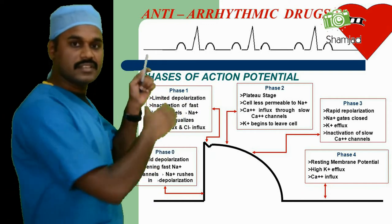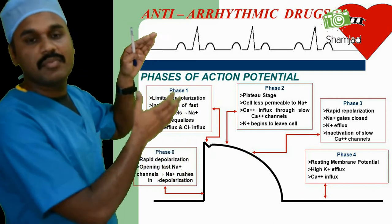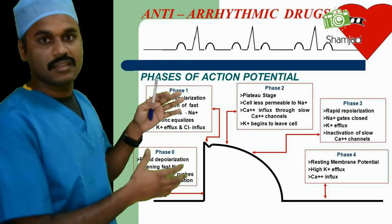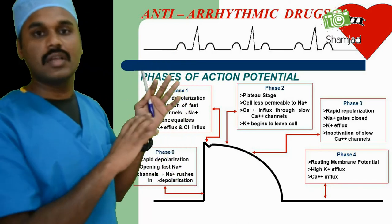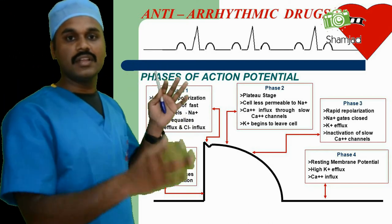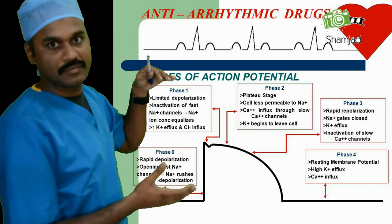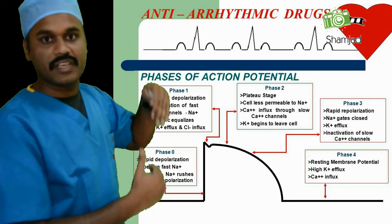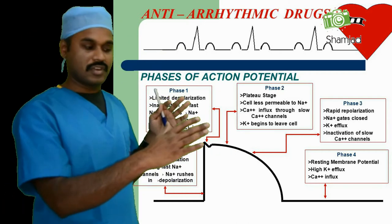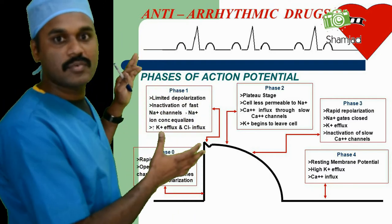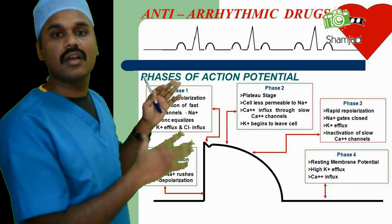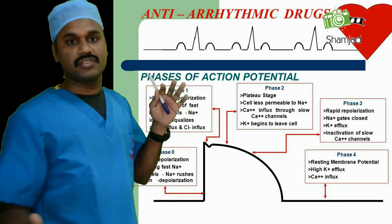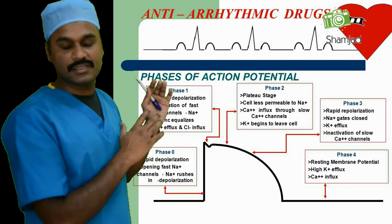Phase three means rapid repolarization or relaxation of the muscle. During this phase, the sodium channel is closed and the potassium channel is open. A larger number of potassium ions go out, and the membrane potential gets more negative, causing muscle relaxation. It then goes to phase four — the resting membrane potential. A high number of potassium ions move out from the cell, so the membrane gets more negative, reaching up to the resting potential of minus 90 millivolts.